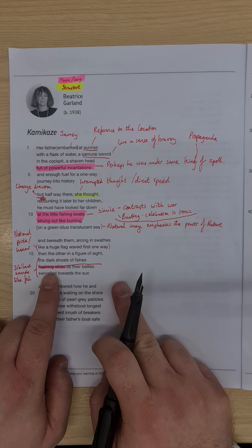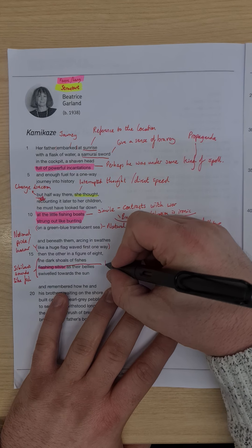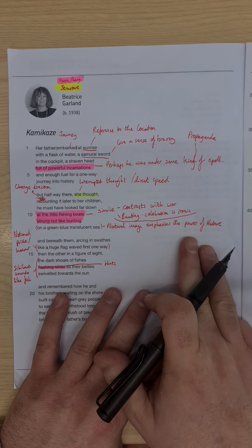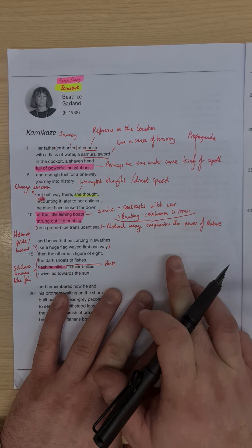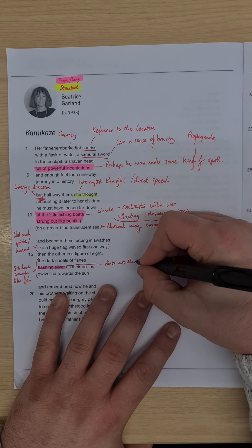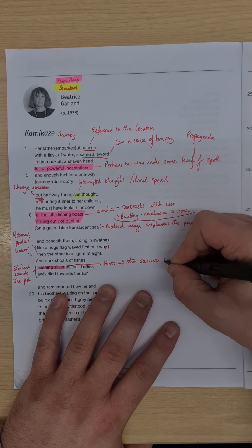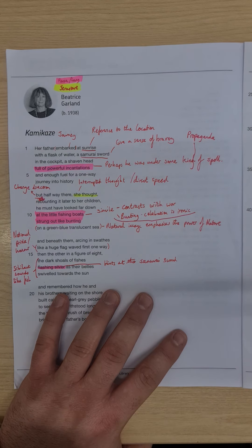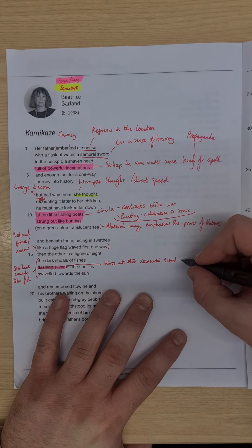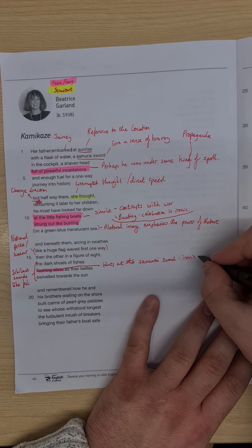The note we're making here about the flashing silver is separate, which hints at something. Hopefully you're noticing that there are two links here. We've got the natural imagery again, but we've also got this link back to the samurai sword mentioned here. So it hints at the samurai sword. And the fact that we have the samurai sword referenced, it's ironic. The sword. He's turning away from combat.